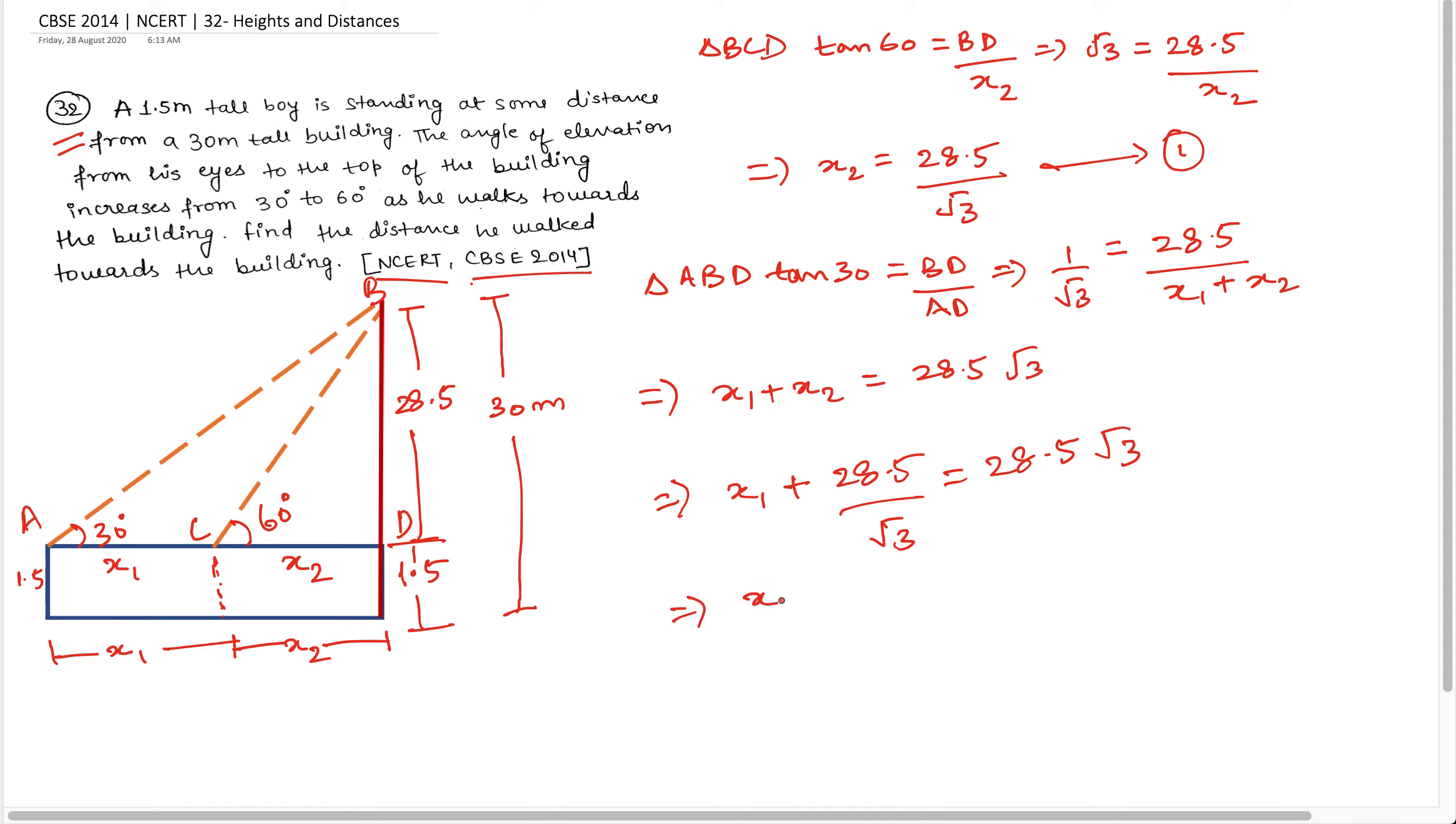अब मैं x1 को इधर रखता हूँ और बाकि सब इधर ले जाता हूँ. तो यह 28.5 मैंने common ले लिया और बन गया root 3 minus 1 upon root 3. इस part को मैं अगर उपर-नीचे root 3 से multiply कर दूँ, तो यह हो जाता है 28.5 और यह आ जाता है 2 upon root 3.